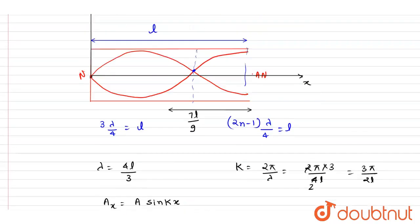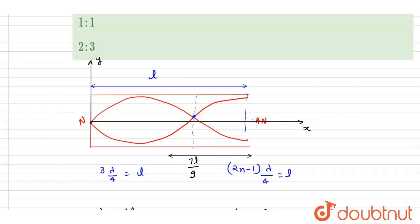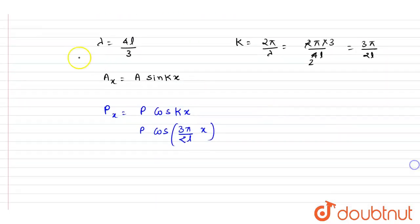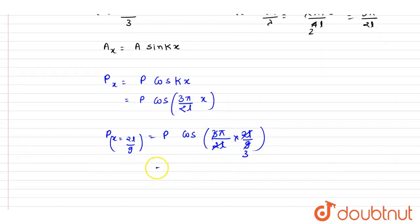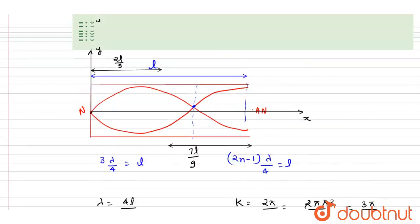The value of x for point Q: since Q is at 7l/9 from the open end, its distance from the closed end is l − 7l/9 = 2l/9. Substituting: P·cos(3π/2l · 2l/9) = P·cos(3π·2/18) = P·cos(π/3) = P/2.